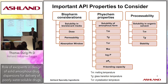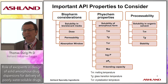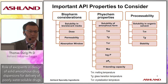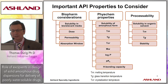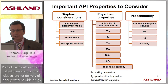When it comes to design considerations for amorphous systems and formulations, there are really three categories to think about: design considerations related to the API and its properties, design considerations related to which polymer to choose, and design considerations related to the actual manufacturing process.